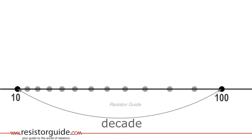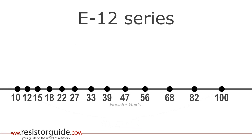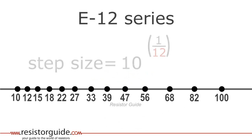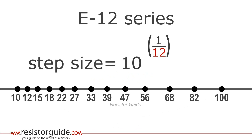Now we divide the decade in 12 steps. It is done in such a way that every next value is 20% higher than the previous. This is called the E-12 series. To calculate the step size for an E-Series is simple. It is always 10 to the power of 1 divided over the number of the E-Series, in this case 12. This gives roughly 1.2, or 20%.